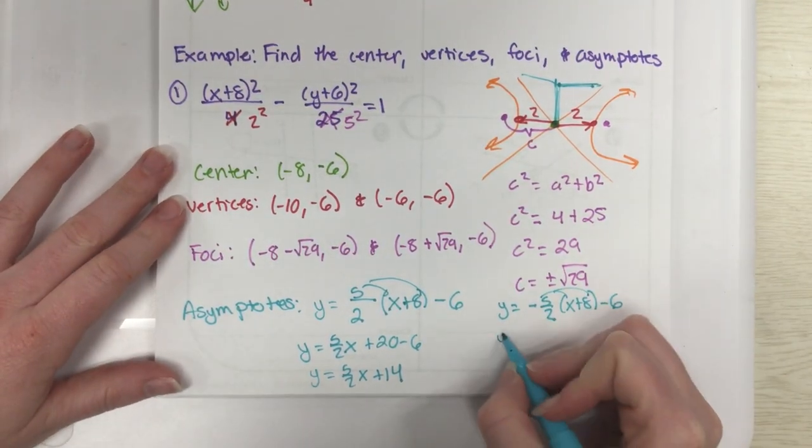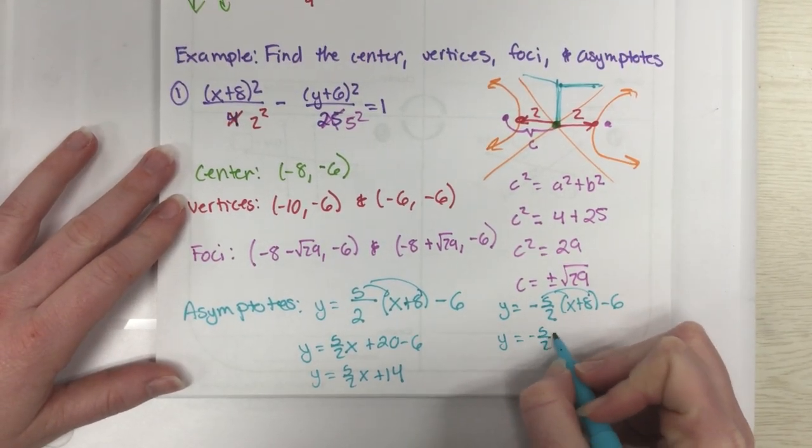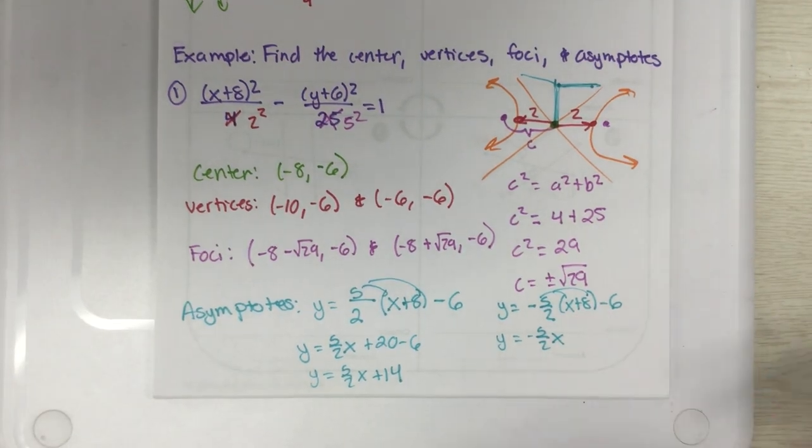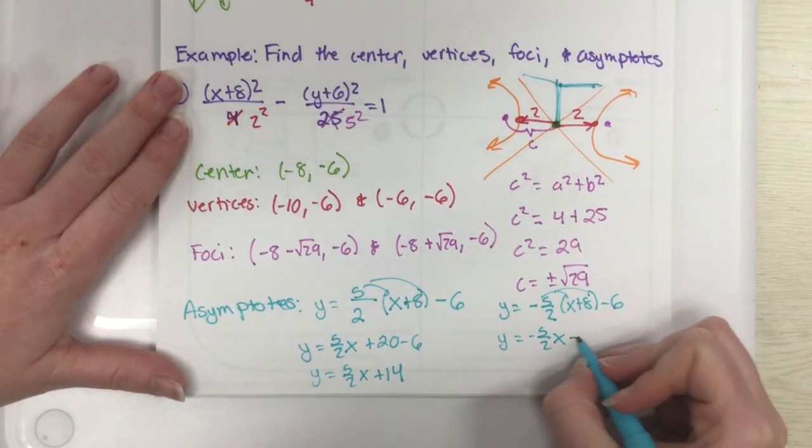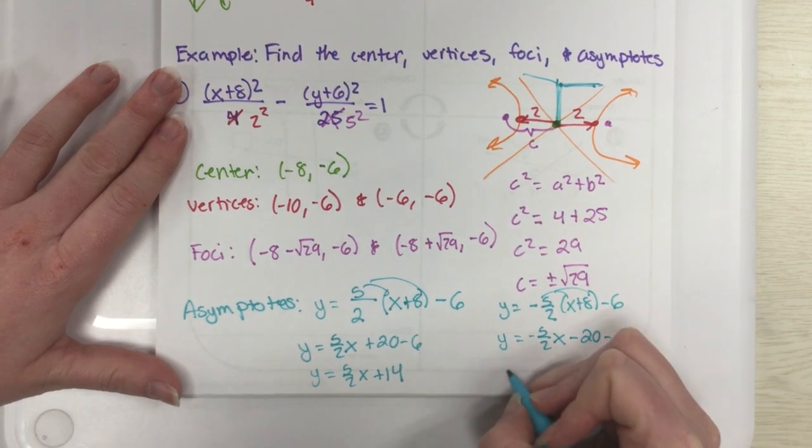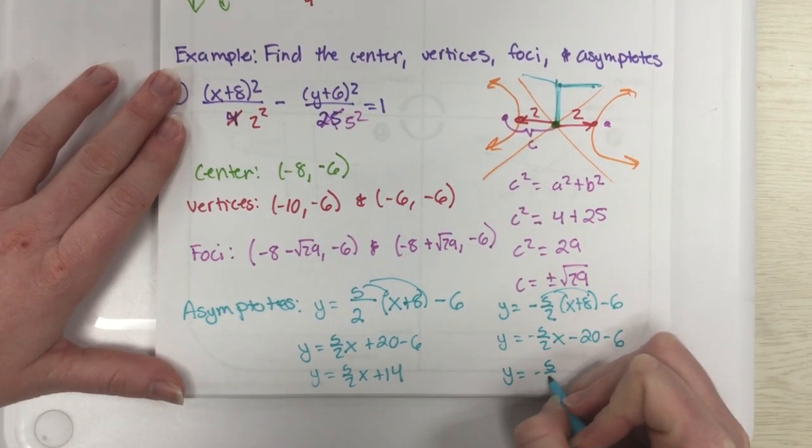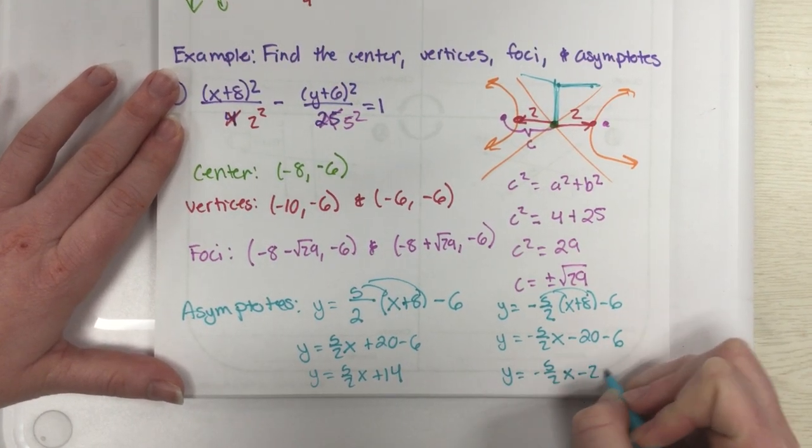Over here, it's going to be slightly different, though, because I will have that negative 5 half x, but instead of being a plus 20, this time is going to be a minus 20 minus 6. So, instead of being a positive 14, we are going to end up at a negative 26.